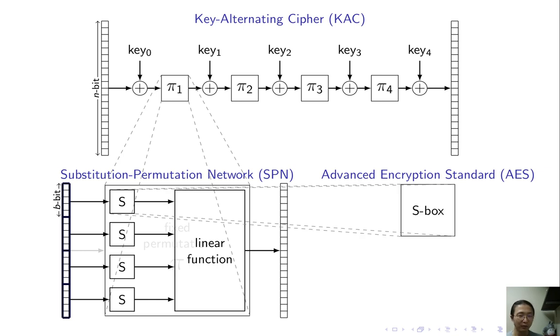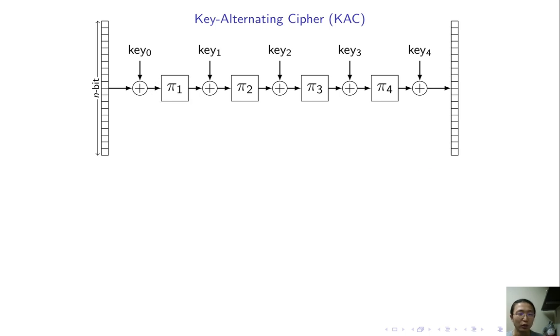AES is a special case of SPN. The block is 8-bit long, and the S-box is the inverse function. Here, I ignore some technical details that are not important for understanding. So, R round KAC has R plus 1 round keys. Actually, this is also true for SPN or AES. And therefore, it cannot be R plus 2 wise independent due to length of randomness.